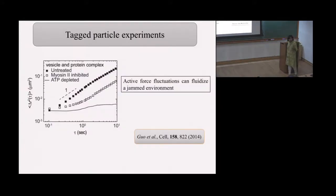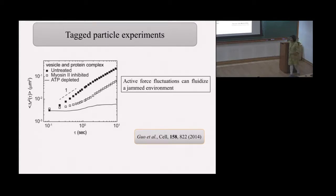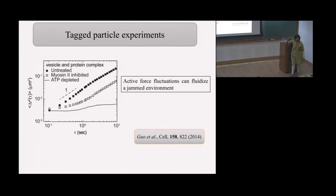For low temperatures and low forces, you have a glass phase; as temperature or the active force increases, you go to the liquid-like state. The only experiment we could find on what activity does to a jammed system was tagged particle experiments from the group of David Waits, published in Cell in 2014. They looked at the cytoplasm of a live cell and the dynamics by means of tagged particle diffusion. The cell has a highly active environment with molecular motors.